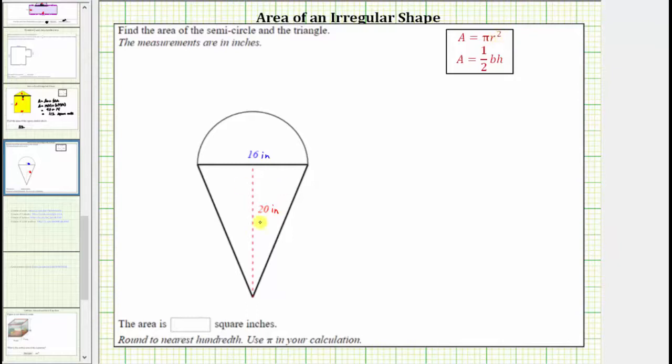And then the area of the triangle is equal to one-half base times height which means the total area is equal to the area of the semicircle which again is one-half pi r squared plus the area of the triangle which is one-half base times height.